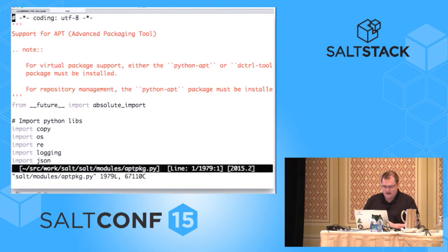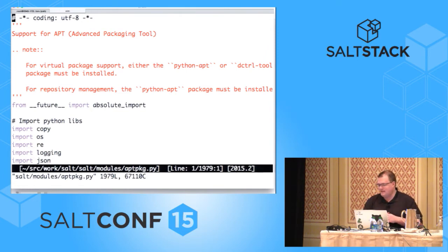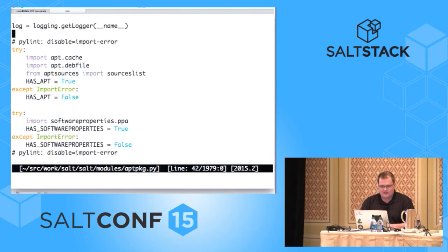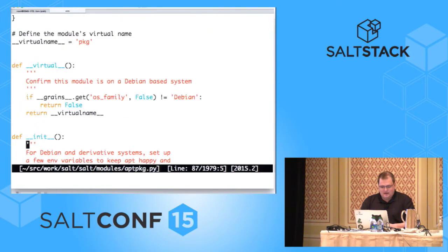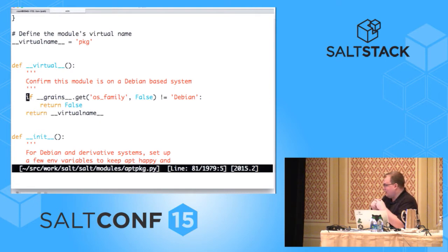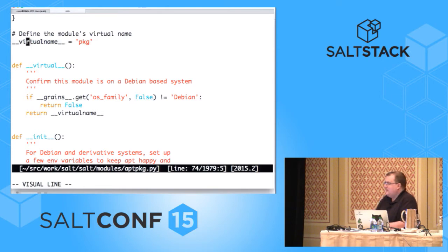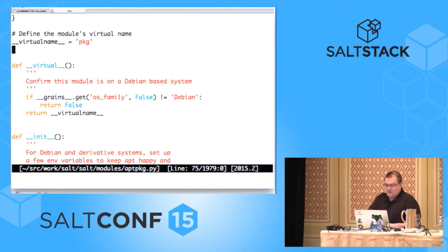The apt package module is the PKG module for Debian systems. We try to import various libraries, and if we have an import error we set a variable to false. In the dunder virtual function, we check dunder grains to see if this is Debian or not — if it's not Debian, we return false; if it is Debian, we return the dunder virtual name, which is just a variable that says 'pkg'. If you return true from a virtual function, it loads the module under its given name. If you return a string, it loads under that name. If you return false, it won't load it at all. On a Red Hat system, the yum package module's virtual function checks the OS grain and OS family grain, and if OS family is Red Hat, that module is loaded instead.